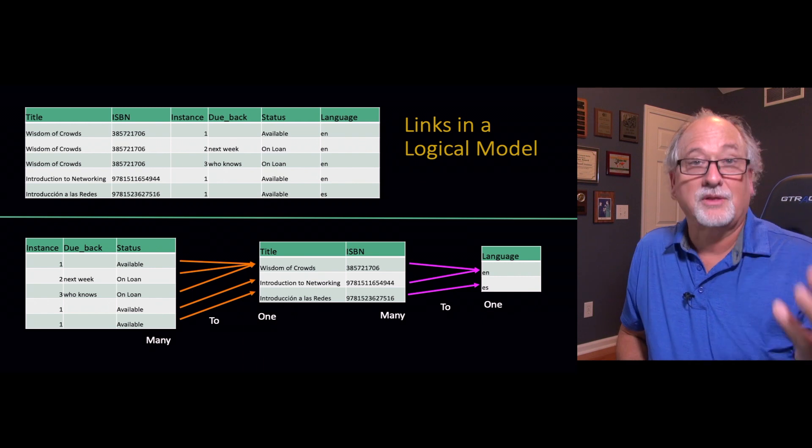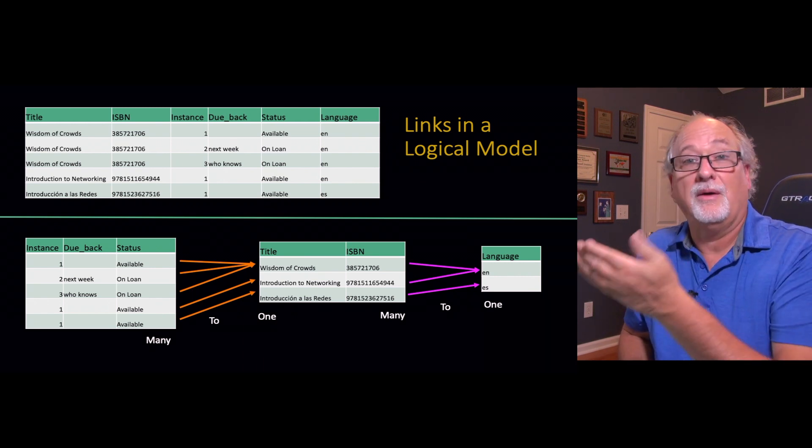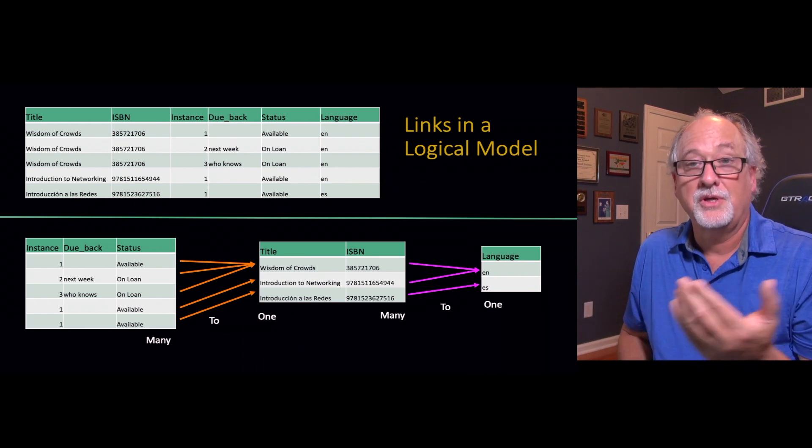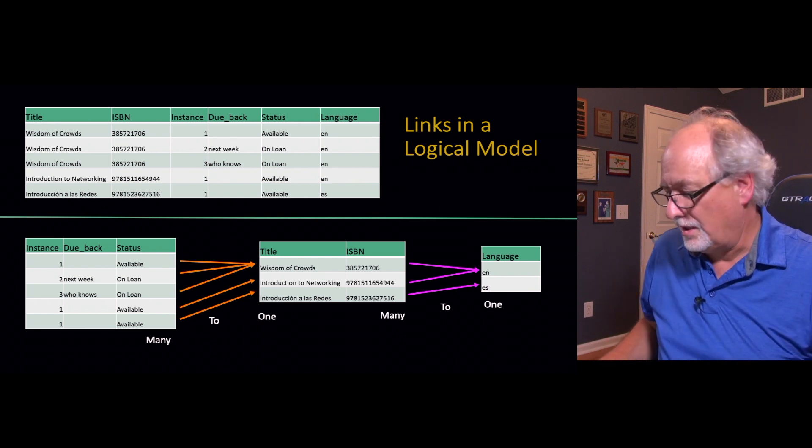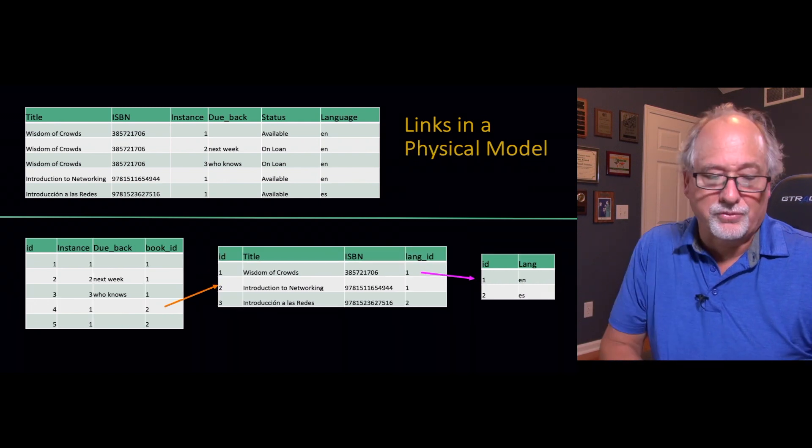Here's some arrows. We got some book instance rows that can somehow magically connect to some book rows, and some book rows that can magically connect to a language row.